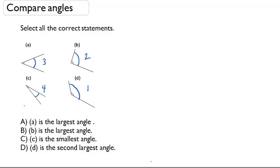Let's take a look at the statements below and figure out which ones are correct. Part A says A is the largest angle. If I look up here at A, we said that A was the third largest angle, so therefore that statement is incorrect.